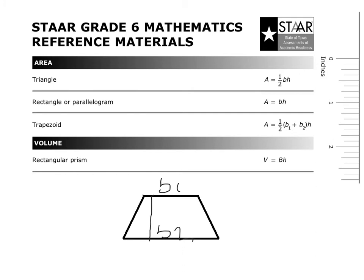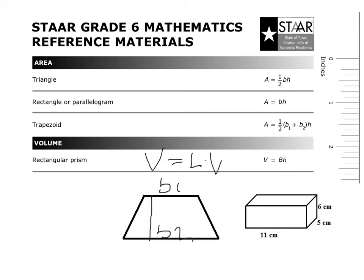We also have rectangular prisms where V equals BH. Remember, the big B actually represents the area of the base. So for example in this rectangular prism you have 5 times 11 — your base is a rectangle so you would have 55, then times the height of 6. Another way to remember this formula is V equals length times width times height. You will only be doing rectangular prisms, so you don't have to worry about any other base formula. Also remember when measuring, you need to start at zero — do not start at the top of your reference sheet.